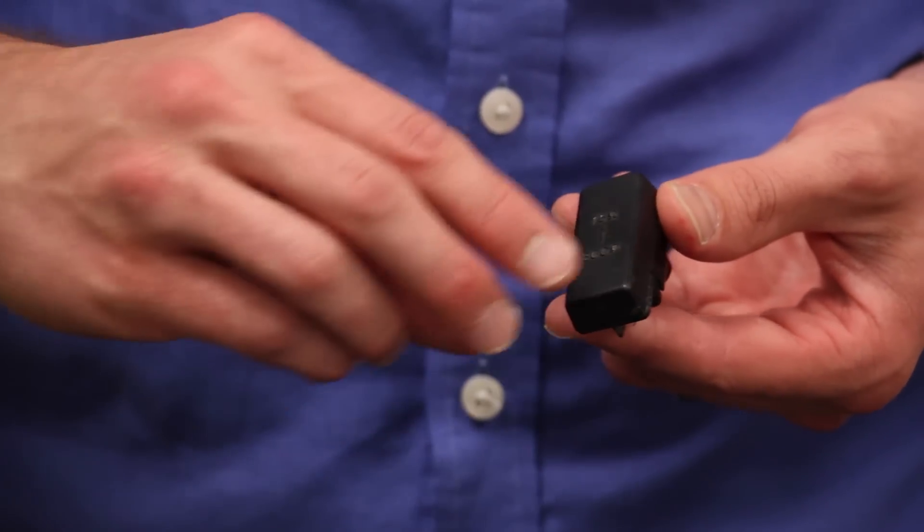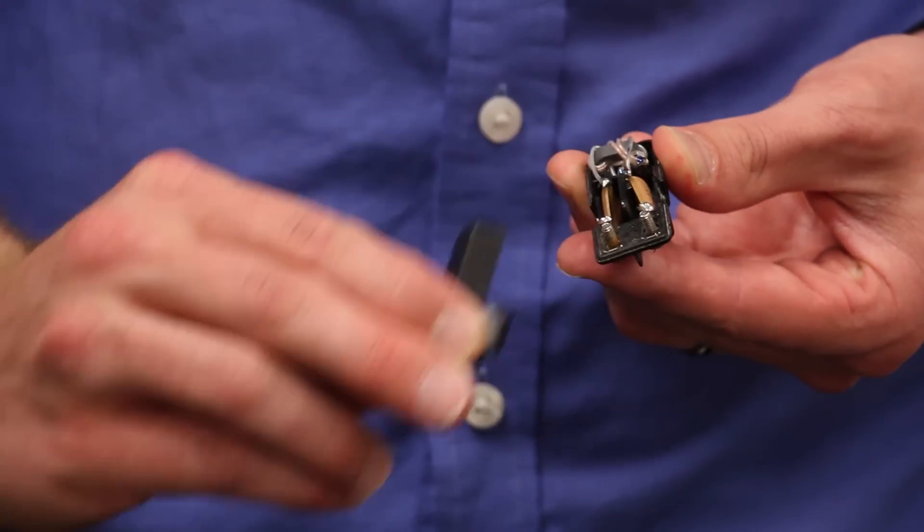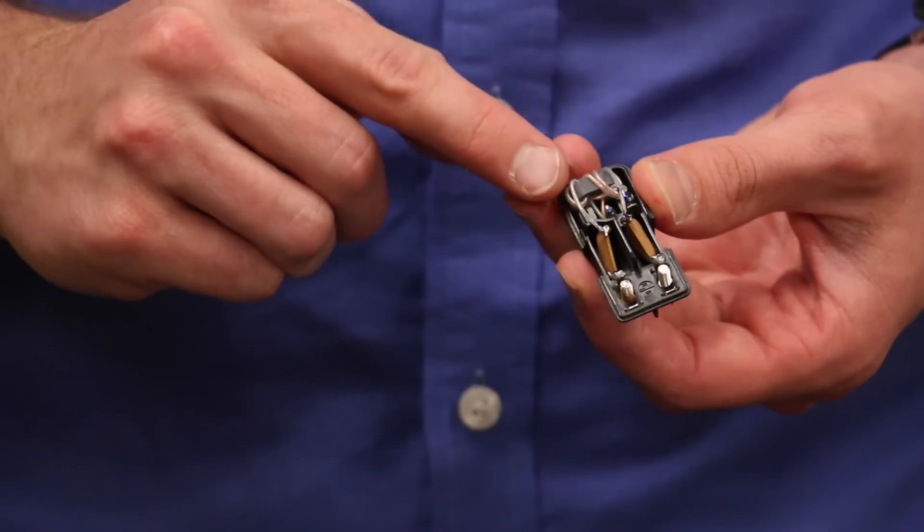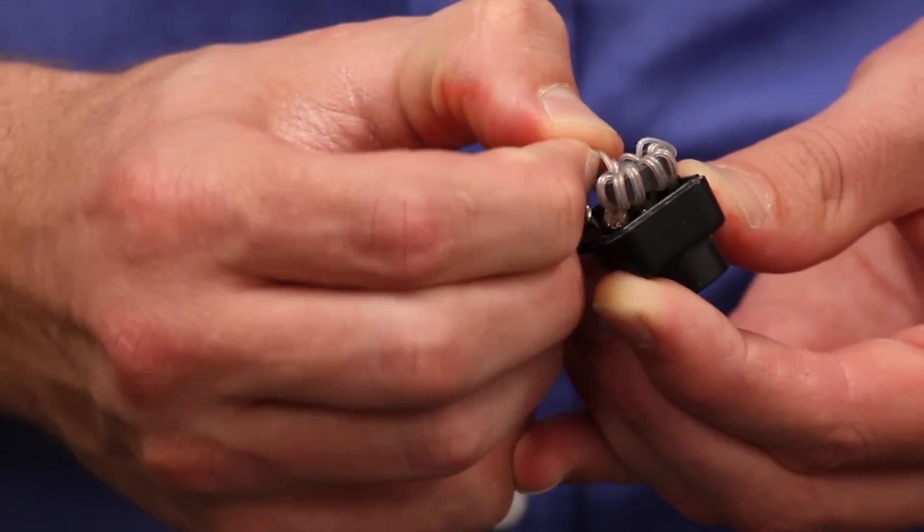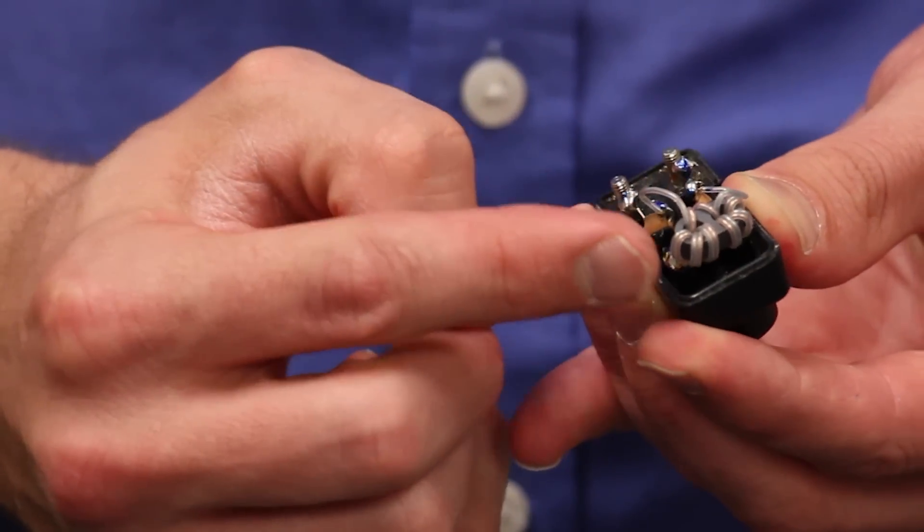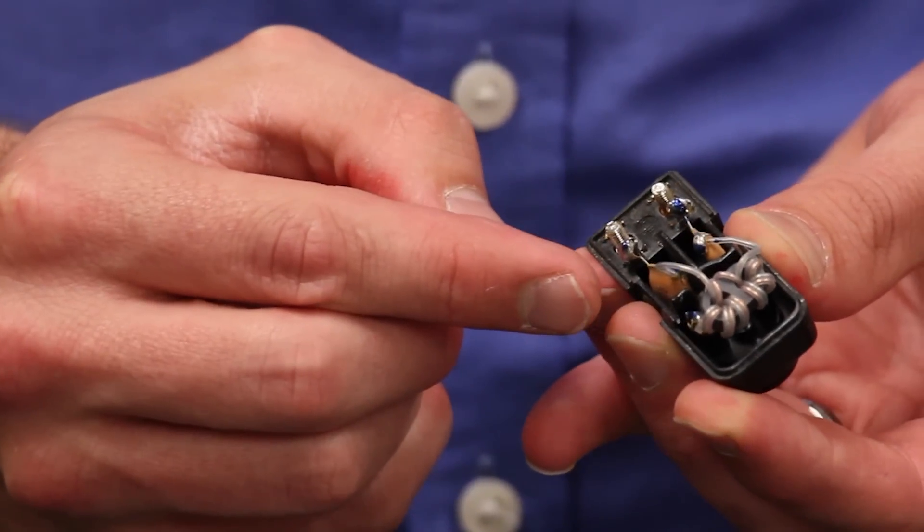If we look inside the transformer, we can actually see the windings. The transformer is toroidal, and the wire is wrapped around this ferrite core. Since it is used to match 300-ohms to 75-ohms, the coils have a different number of turns.